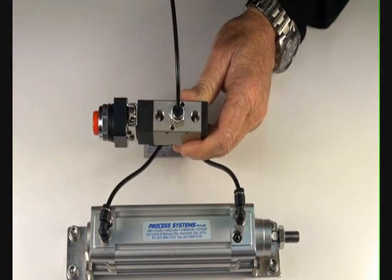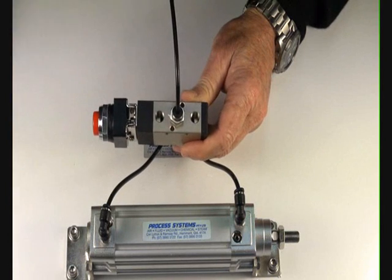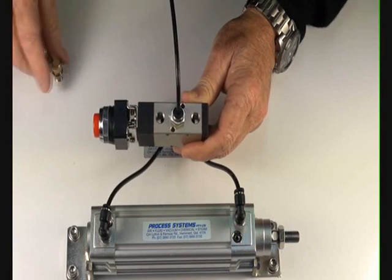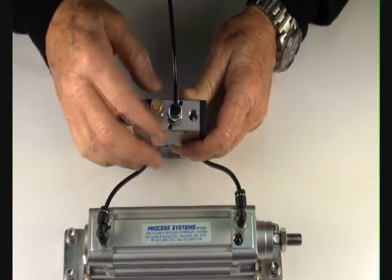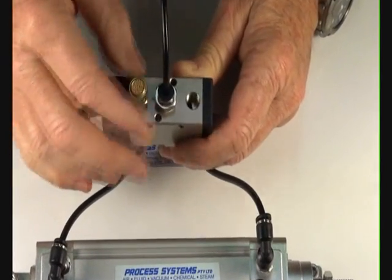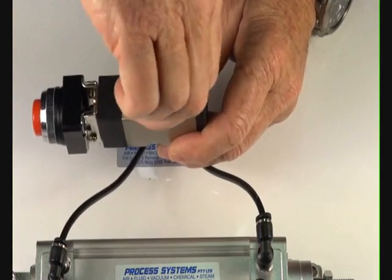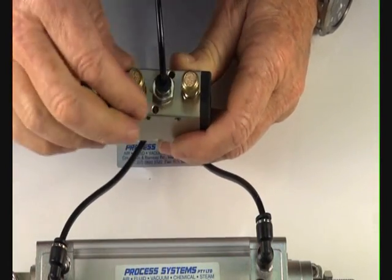For two exhaust ports, we can either put silencers in both ports to reduce the noise down and also stop dust getting inside the valve, or we can use silencer flow control regulators. These will allow us to control the speed of the ram as well as silence the air and keep it clean.